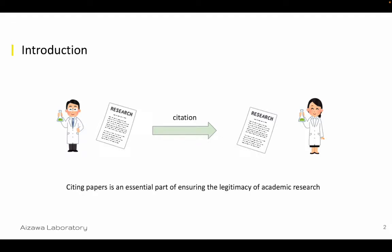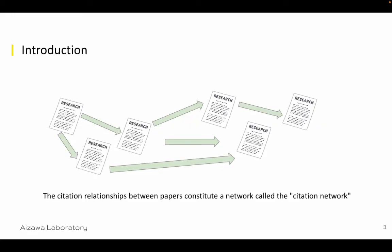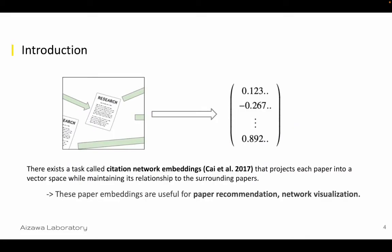Citing other papers is an essential part of ensuring the legitimacy of academic research. By connecting these citation relationships, scientific papers form a network called a citation network. By projecting this citation network into a vector space, we can get citation network embeddings, which are useful for paper recommendation or network visualization.